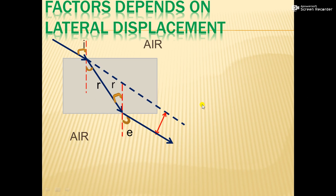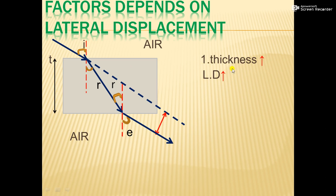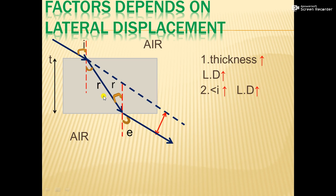Next are the factors that lateral displacement depends on. First is the thickness of the glass slab: if thickness increases, lateral displacement also increases; if thickness decreases, lateral displacement also decreases — so there is a direct relationship. The second factor is the angle of incidence: if the angle of incidence increases, all other angles also increase, and lateral displacement also increases — they are directly proportional.